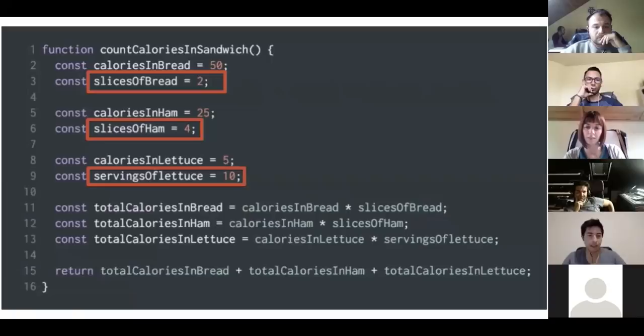At the bottom, lines 11, 12, and 13, we just multiply calories in bread times slices of bread. So calories in bread, 50, times slices of bread, 2, is equal to the total calories in bread. Make sense to everyone?